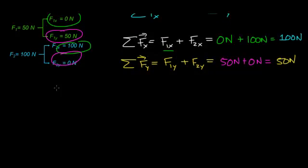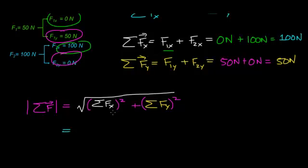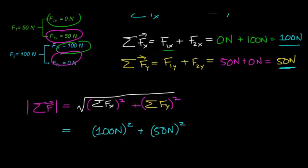To find the magnitude of the net force acting on this object — represented with absolute value signs around the net force — we take the square root of the sum of the forces in the x direction squared plus the sum of the forces in the y direction squared. So we take 100 Newtons squared plus 50 Newtons squared, then take the square root of the entire sum. Notice that the units of force become squared as well.